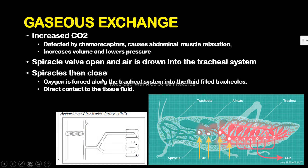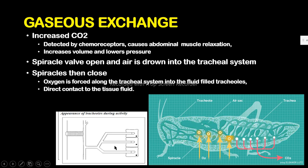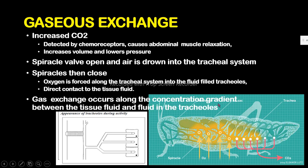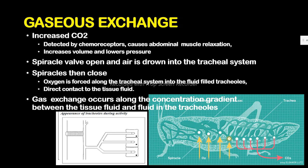The spiracles then close, and oxygen is forced along the tracheal system into the fluid-filled tracheoles in direct contact with the tissues. The fluid is drawn to the tissues because they are highly concentrated. Gas exchange occurs along the concentration gradient between the tissues and the fluid in the tracheoles. The insect obtains its oxygen with ease. This system is more efficient than a blood transport system because it performs just one function — gas exchange — transporting oxygen directly to the tissues and carbon dioxide directly away.